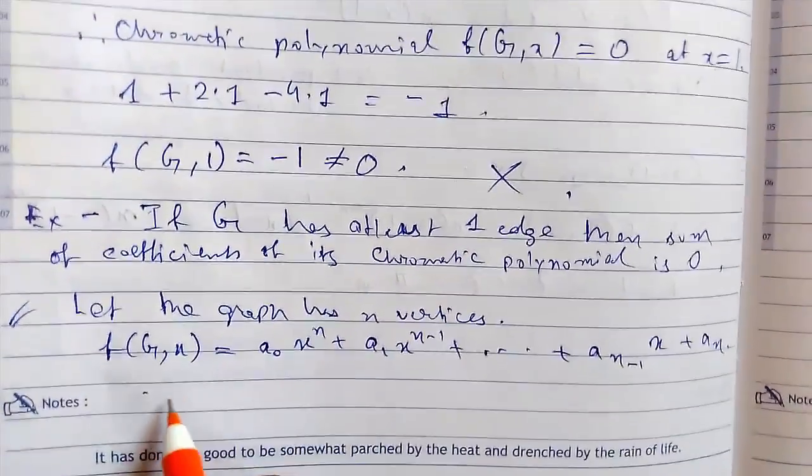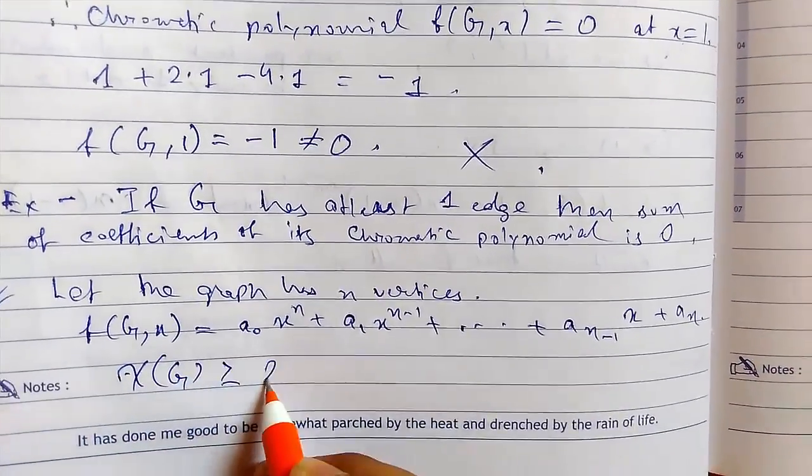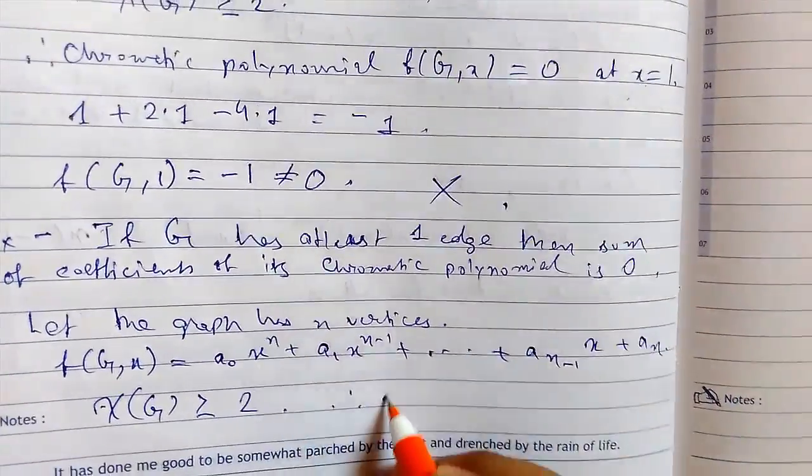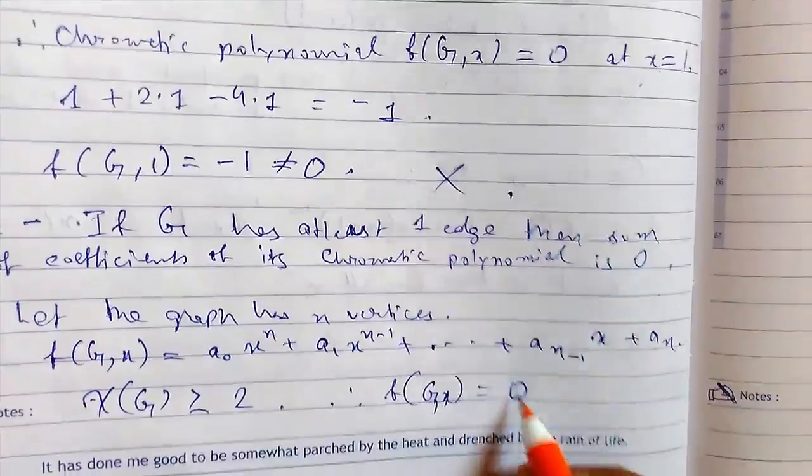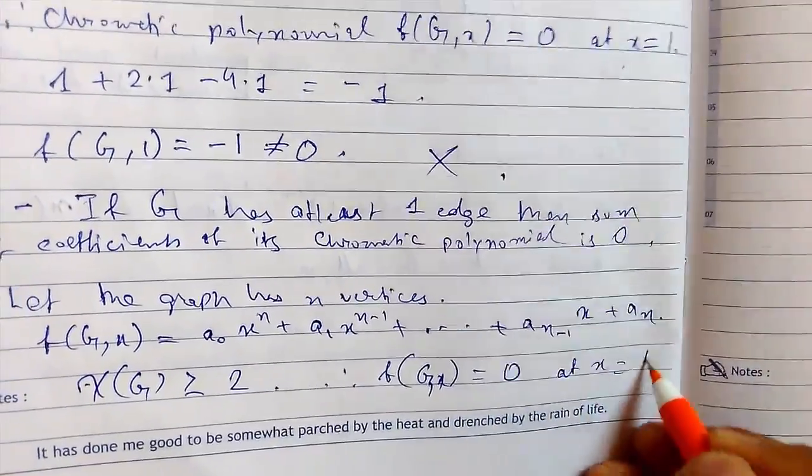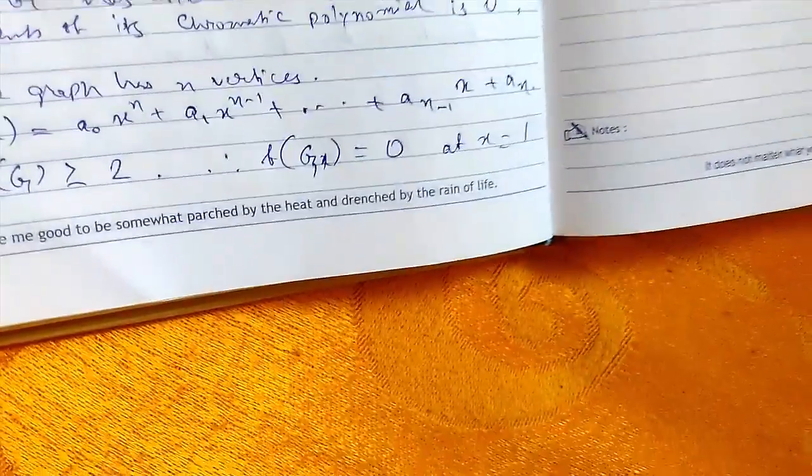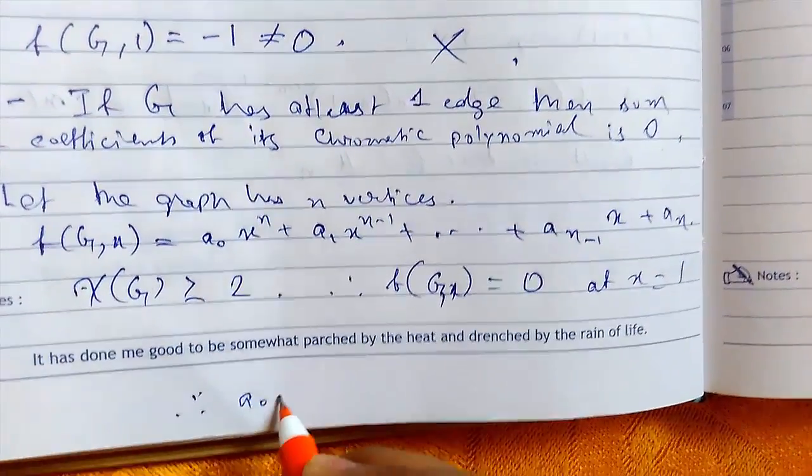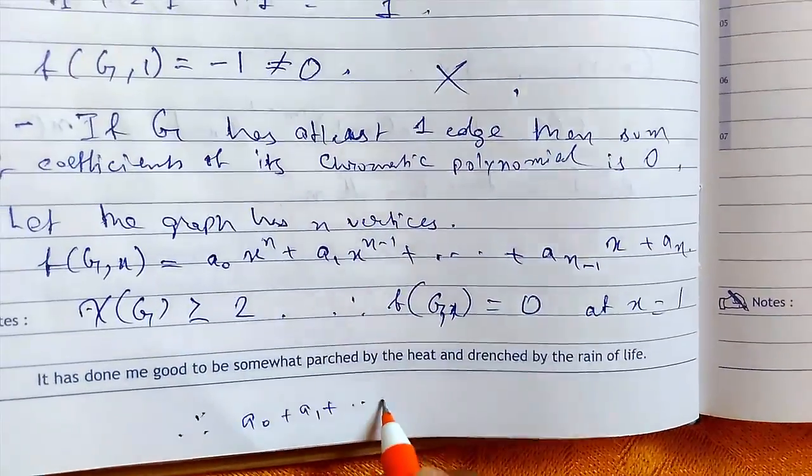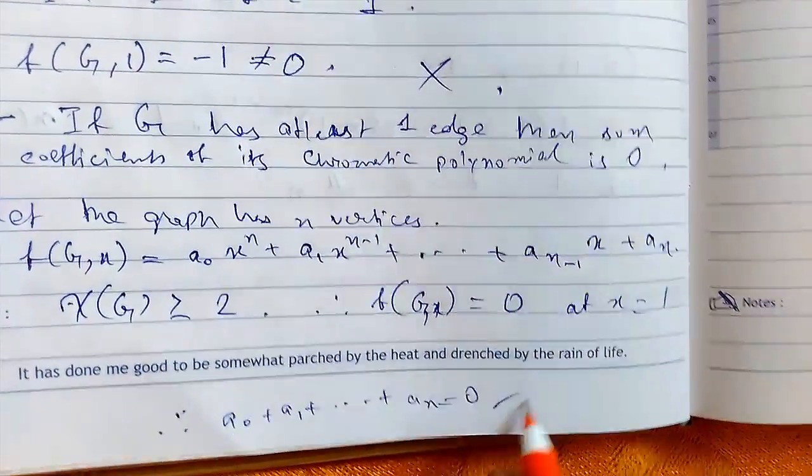We can apply this condition. So if f of x comma 0, g of x comma 0 has to be 0 at x equals to 1, so thus all the coefficients will be 0. So putting this value, a0 plus a1 plus up to a n that is equal to 0.